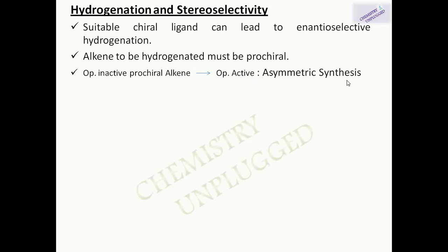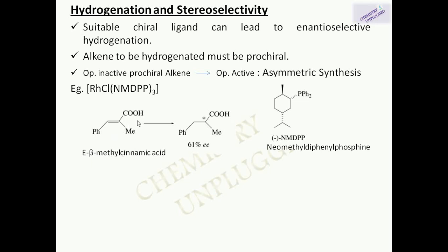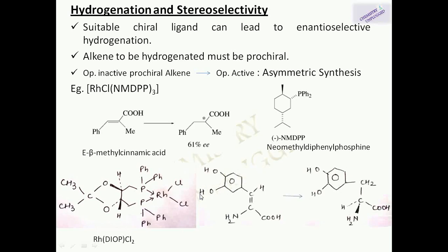Wilkinson's catalyst has the capability of converting an optically inactive prochiral alkene into an optically active product, which is known as asymmetric induction or enantioselective synthesis. For example, there is a Rh(I) complex in which NMDPP is neomethyldiphenylphosphine. If we use it to hydrogenate (E)-β-methylcinnamic acid, it gives 61% enantiomeric excess. Another example is the rhodium complex containing chiral diphosphine DIOP — Rh(DIOP)Cl₂ — which when used to hydrogenate an alkene converts it into S-DOPA, a medicine used for the treatment of Parkinson's disease.